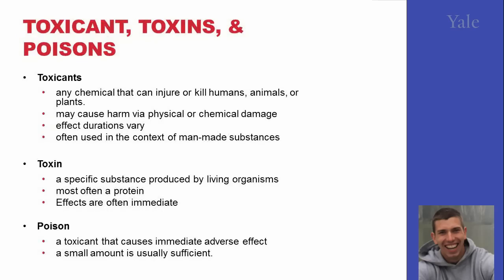There are three main types you should know, which are toxicants, toxins, and poison. Toxicants are basically chemicals that can injure or kill humans, animals, or plants. They are often related to man-made substances, synthetic chemicals, and things we try to minimize in green chemistry.